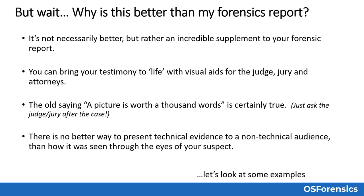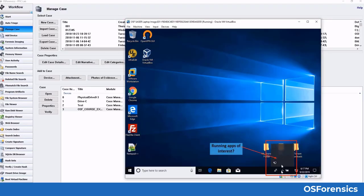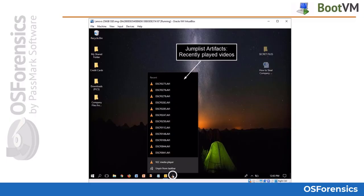Let's look at some examples. You might look for any interesting applications running automatically. One of the many advantages to analyzing a system this way is that you can view much of the data and evidence in their native applications. It is also a very good way at helping to explain the artifacts you included in your report to a non-technical audience. Things like jump lists, prefetch files, MRUs, etc. might be confusing for those not involved in this type of work.